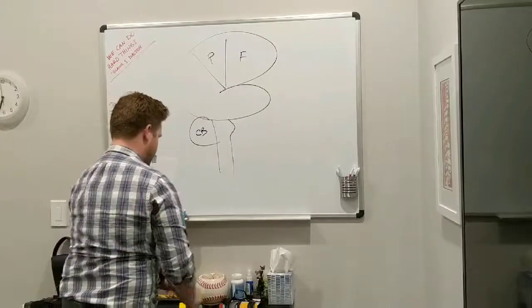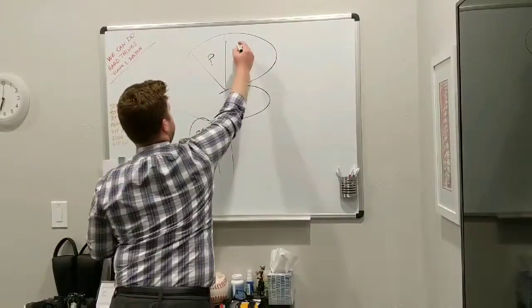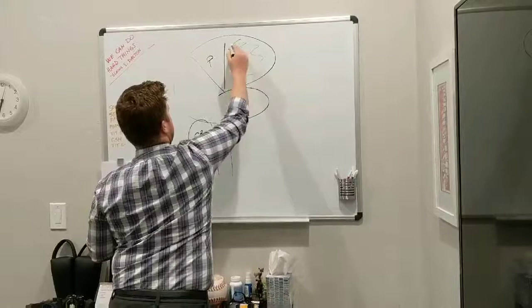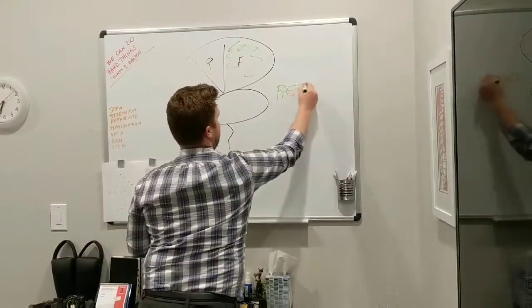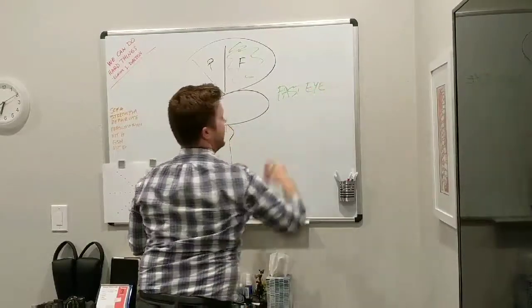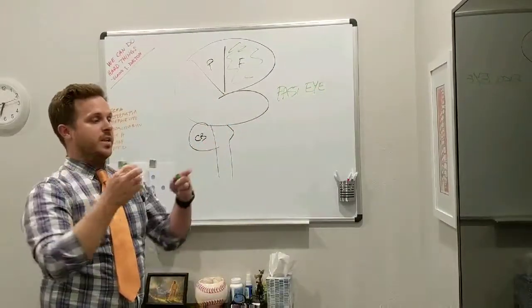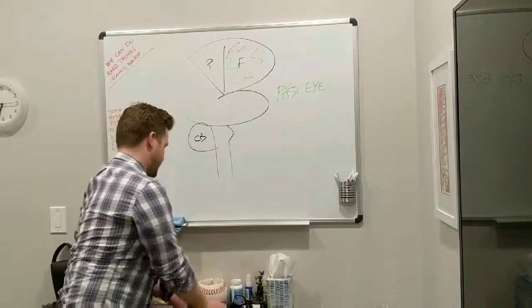Okay, so let me color these out real quick. We have our frontal lobe, and what we do with our frontal lobe here is fast eye movements. So this is your ability to look at one target and then quickly move your eyes to another target, from one to another. That's frontal lobe.